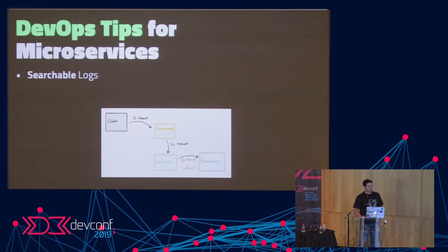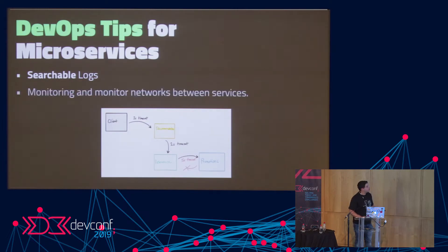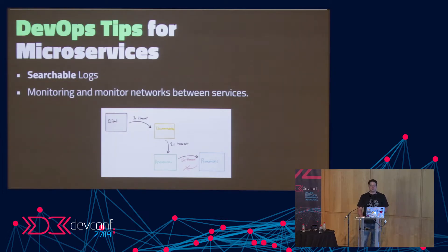Another tip is to ensure your logs are searchable. If you're going to have a lot more logs from a lot more microservices, you need a tool that makes it easy to search them and see what's going on. And another thing is monitoring — with a monolith, you mainly monitor host-level metrics like CPU usage, network usage, disk usage, and memory usage.